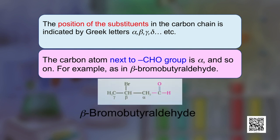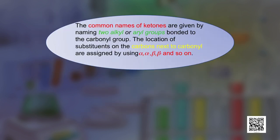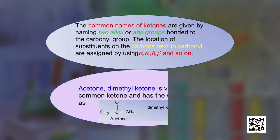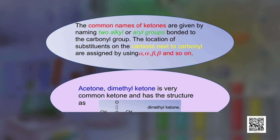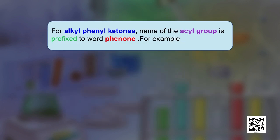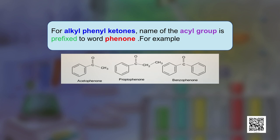For example, in beta-bromobutyraldehyde, a bromo group is present at the beta position. The common names of ketones are given by naming the two alkyl or aryl groups bonded to the carbonyl group. The location of substituents is assigned using alpha, alpha', or beta, beta' positions. Acetone, also called dimethyl ketone, is a very common ketone. For alkyl phenyl ketones, the name of the acyl group is prefixed to the word 'phenone' — for example, acetophenone, propiophenone, and benzophenone.